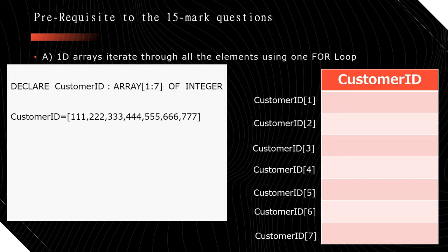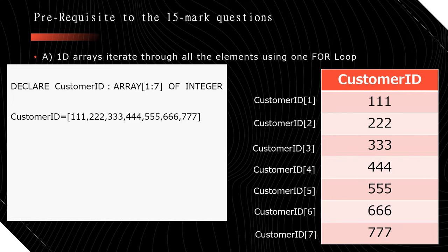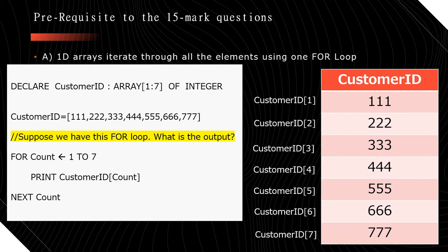Cambridge might already have some data saved in the array, even if they don't show you the data. For example, CustomerID[1] is 111, the second is 222, then 333, 444, 555, 666, and 777. This is how it's going to look in memory. Now suppose we have this for loop pseudocode — what's going to be the output? The code says: for count assigned from 1 to 7, print CustomerID[count], next count.